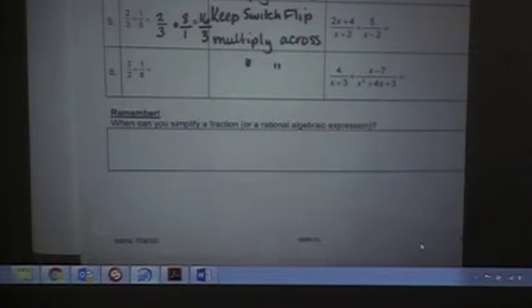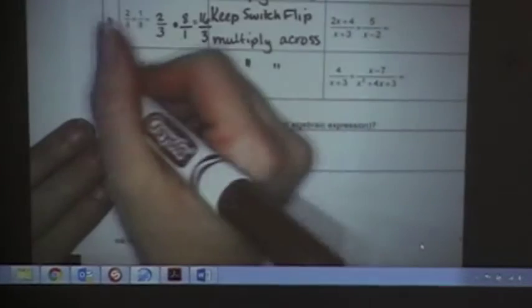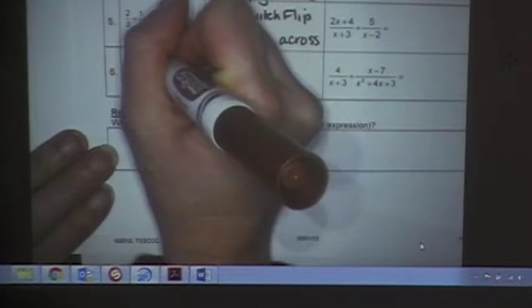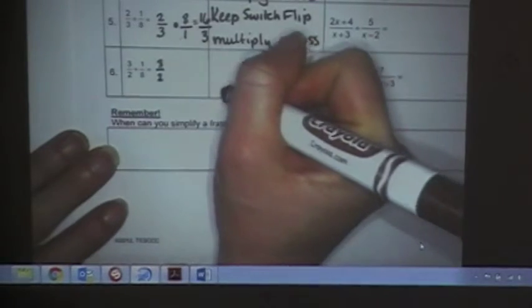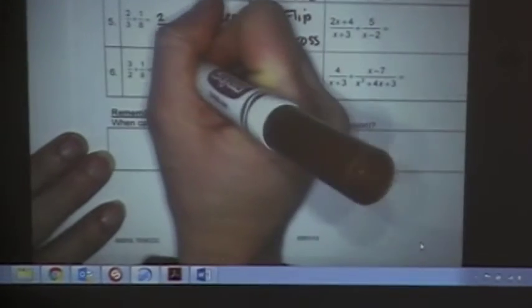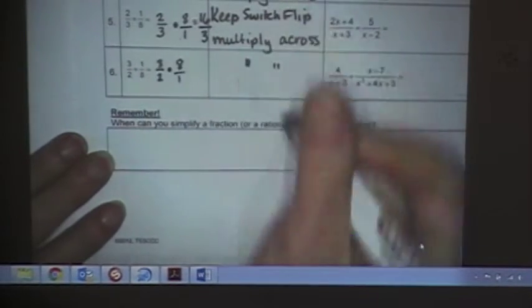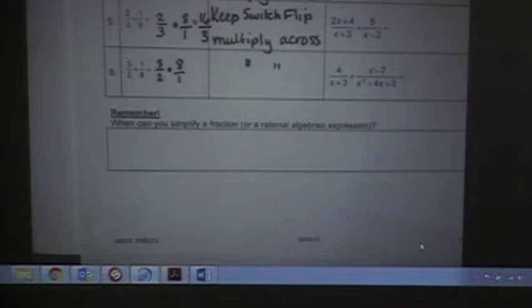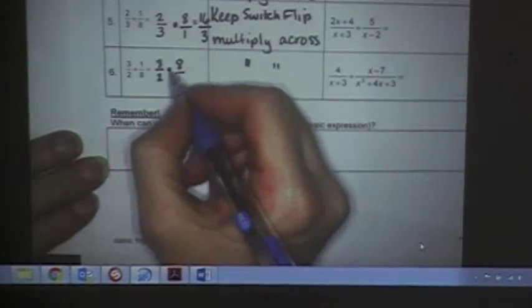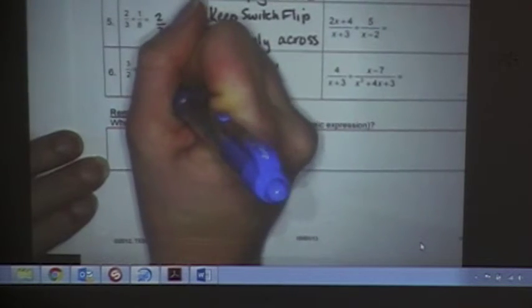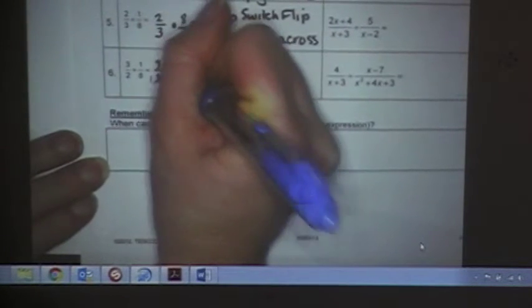Problem number six is the same, you keep switch flip, if you have common factors, cancel them, and then multiply across. So, on problem number six, I keep the first fraction the same, three-halves, switch it to multiplication, flip the second one over. Now, on this one, I do have common factors, because two goes into both two and eight. So, that'll go in one time, and here it goes in four times. So, we multiply straight across. Twelve over one, which is just twelve.